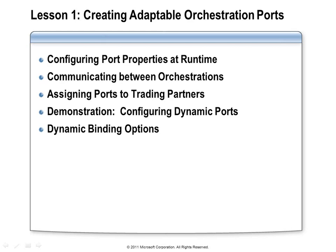Let's get started by talking about how we can apply other binding types to our orchestration ports. We have already talked about the specify now and specify later binding types. The two new binding types we will cover here are dynamic binding and direct binding. We're also going to talk about how we can assign specific ports to different trading partners and use something called role links within our orchestration to interact with those ports.